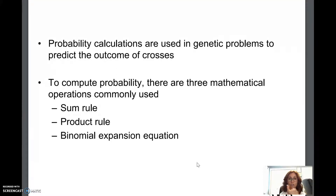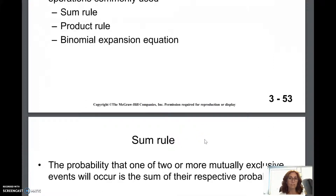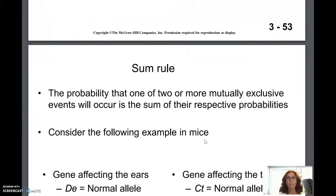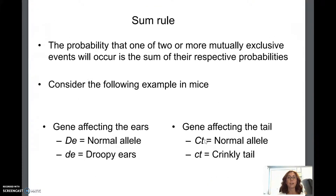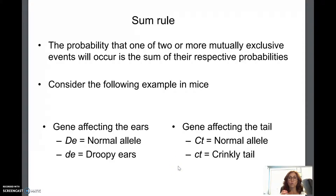There are three rules we typically think about, but I only really want you to focus on two: the sum rule and the product rule. Binomial expansion is very important, but for now just focus on the sum rule and the product rule. The sum rule usually works when you're looking at what we call mutually exclusive events.